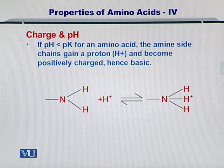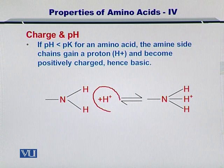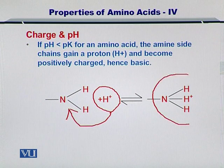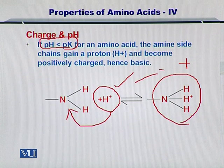If the pH is less than the pK value for an amino acid, the amine side chain gains a proton and becomes positively charged — hence basic. As shown in the figure, if a proton is added onto the amino group, then the overall charge is positive. So if pH is less than pK, enough protons will be available to give rise to a positively charged amino acid group.